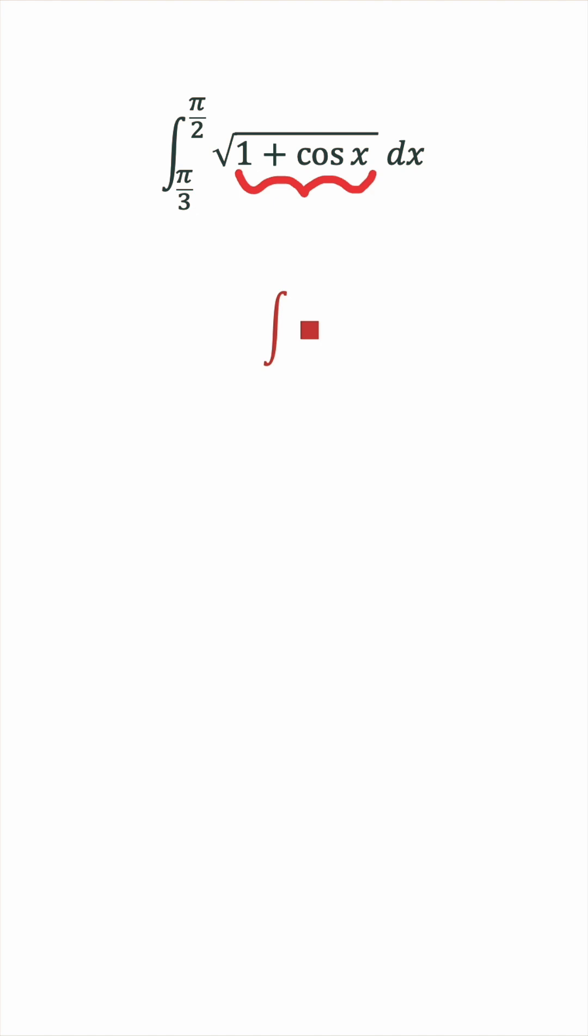We know that the cosine squared term appears in the double angle identity. Now we have cosine x, not cosine 2x in the integral, so let's replace x by x over 2.